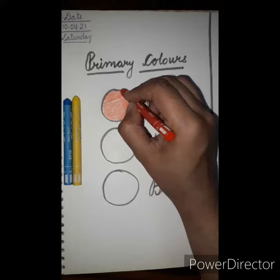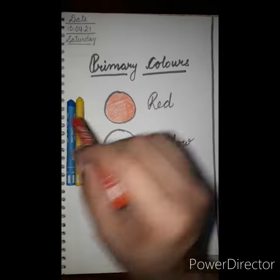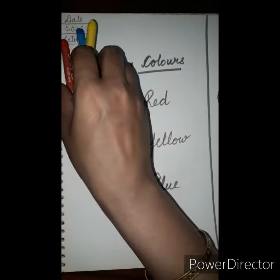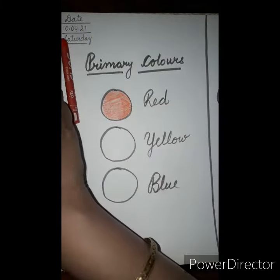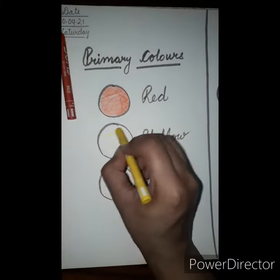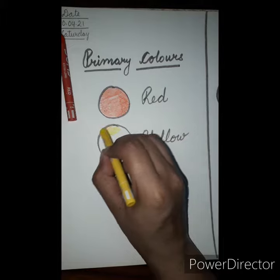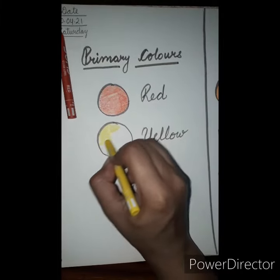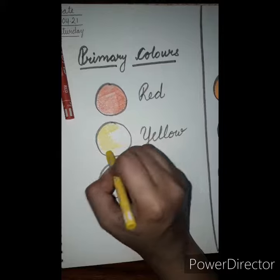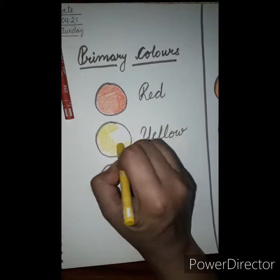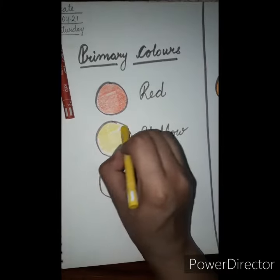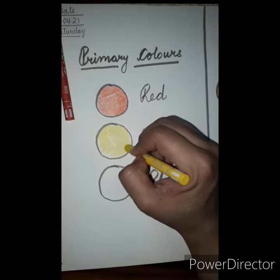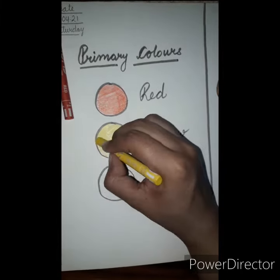Now, next is yellow. Look how ma'am is doing. Very good children, you also have to do it like this. You also have to make circles like this in your score drawing file.